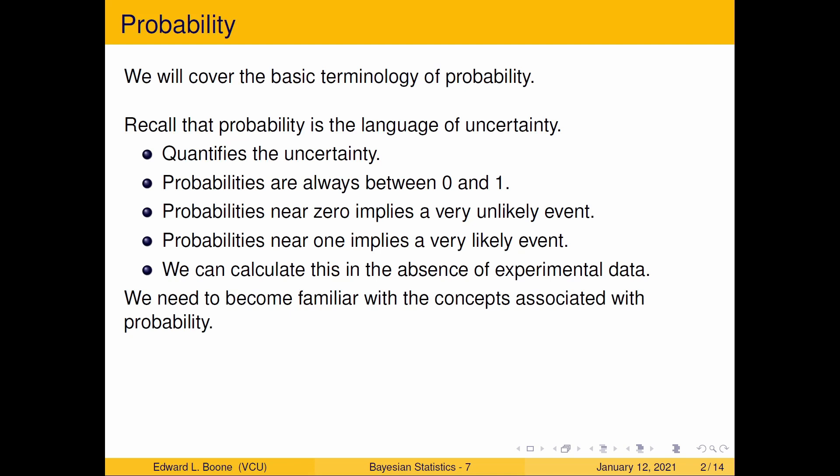When I say quantifies it, it means that it assigns uncertainty a number. These probabilities are always between zero and one. Probabilities near zero imply a very unlikely event, and probabilities near one imply a very likely event. We can calculate this in the absence of experimental data under certain assumptions, and we need to become familiar with these concepts so that we can work our way through this course and make use of everything that Bayesian statistics has to offer.